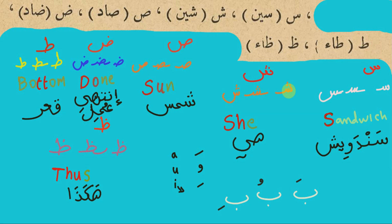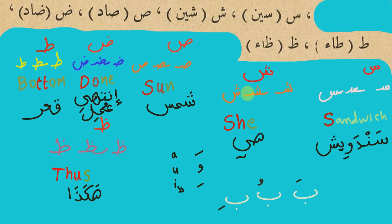One, two, three — the same here: one, two, three. The reason you do that is other letters might have a tooth, so you distinguish between these and the others. So SHA.